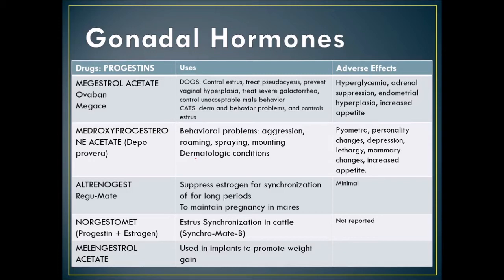Altrenogest — Regu-Mate — suppresses estrogen for synchronization over long periods and is used to maintain pregnancy in mares because it's a progesterone. Norgestimate is both a progestin and estrogen and is used to synchronize estrus in cattle. Melengestrol acetate is used in implants to promote weight gain.